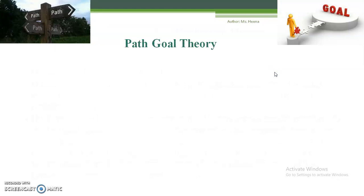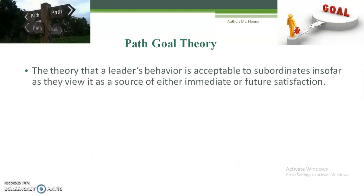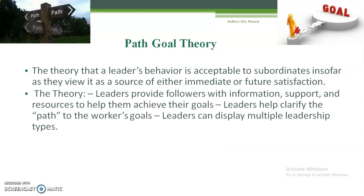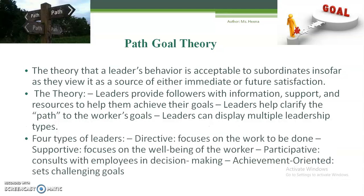Next is Path-Goal theory. This theory states that a leader's behavior is acceptable to subordinates insofar as they view it as a source of either immediate or future satisfaction. Leaders provide followers with all the information and support needed, and clarify the path. There are four types of leader behaviors: directive, supportive, participative, and achievement-oriented.